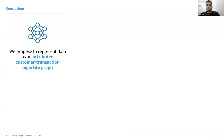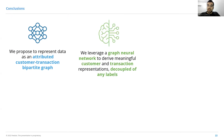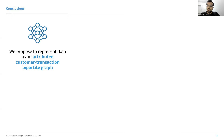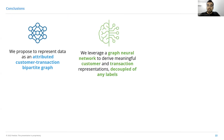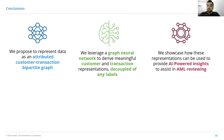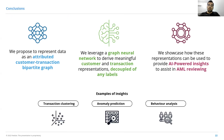In summary, we propose to represent the data as an attributed customer transaction bipartite graph. We then use a graph neural network to derive meaningful representations of behavior at the level of both customers and transactions, decoupled of any labels. We showcase how these representations can be used to derive AI-powered insights to assist in AML reviewing, providing examples of three insights: transaction clustering, anomaly prediction, and behavior analysis. Thank you very much.